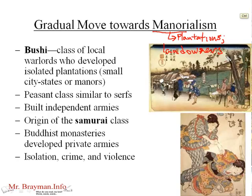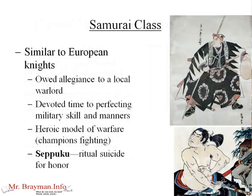These bouchies started building independent armies separate from the imperial army, creating ultra-localized, low-level feudalism. This is where the samurai class comes out of — the samurai were the most sophisticated warriors, the heroes of a bouchy's army, the top warriors. It became so fragmented that Buddhist monasteries were also developing their own private armies or hiring local thugs as private police forces. The samurai class is comparable to European knights — they owed allegiance to a local warlord or bouchy, and devoted time to perfecting military skill and manners. These were ultra-elite, ultra-high-level warriors who required a lot of food, energy, and technology to support as they focused all day on becoming great fighters.